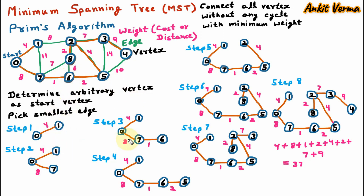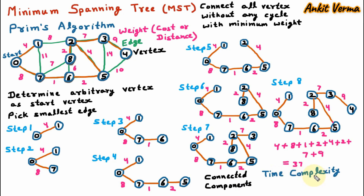In Prim's algorithm, at every step we observed connected components — all vertices are always connected using edges. There is one more algorithm for minimum spanning tree which is the Kruskal algorithm. Kruskal's algorithm may have disconnected components, but Prim's algorithm always has connected components. The time complexity of Prim's algorithm is O(E log V), where E is the number of edges and V is the number of vertices.